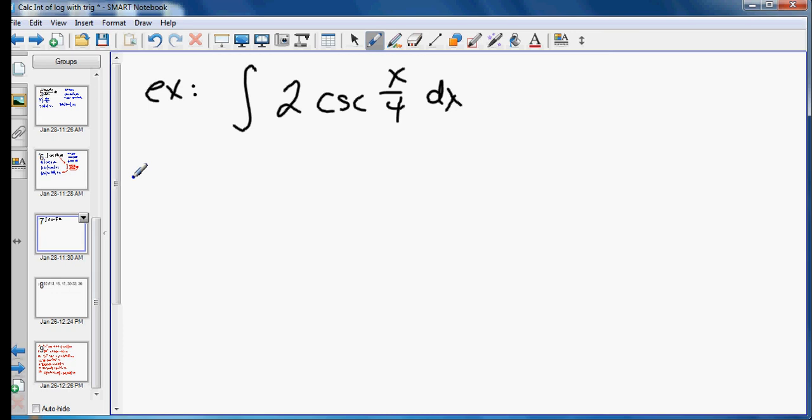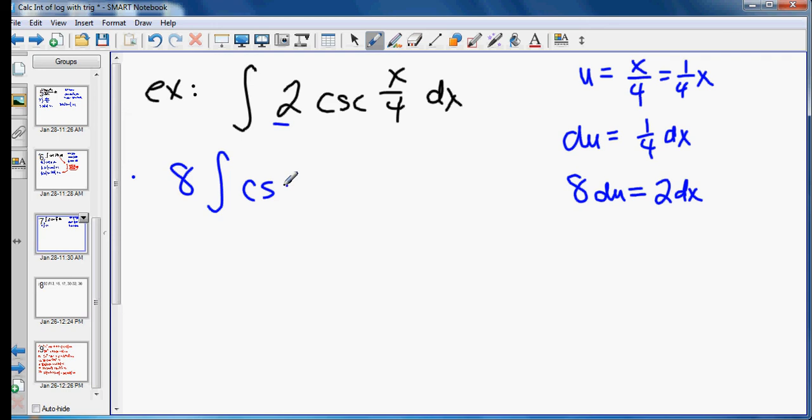So we'll have u equals x over 4. Or if it's easier to think about, you can write it as 1 fourth x. The derivative of that is 1 fourth dx. And we need to change that 1 fourth to a 2 so it matches what I have over here. So I'm going to multiply both sides by 8.